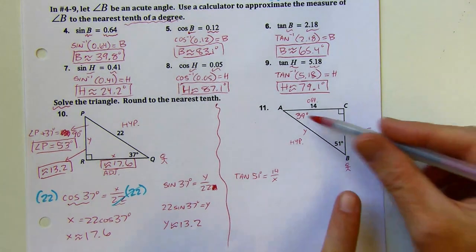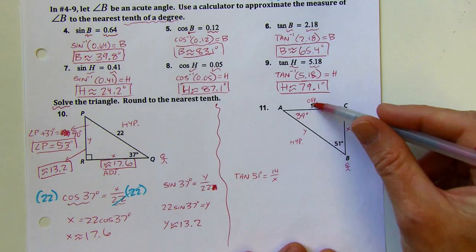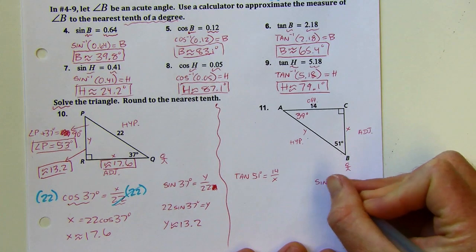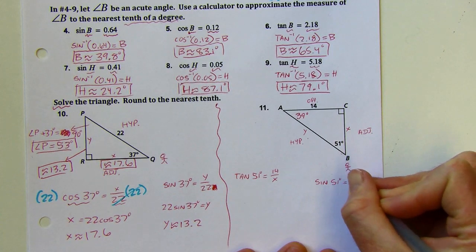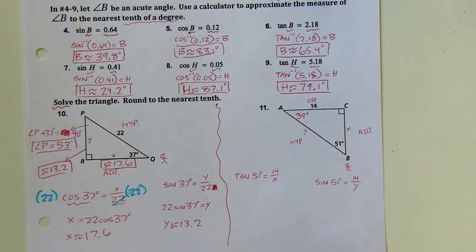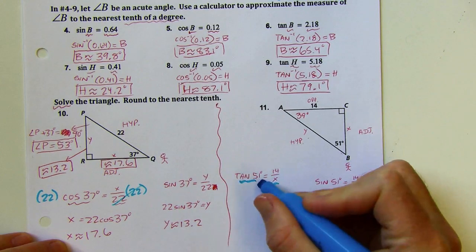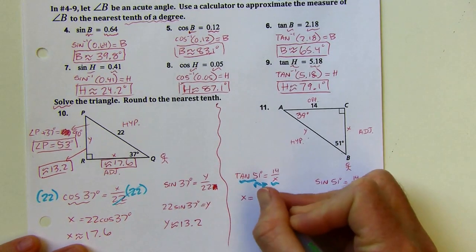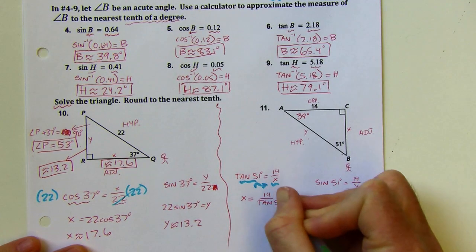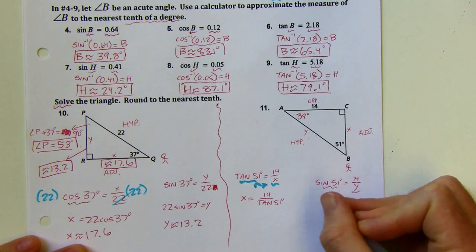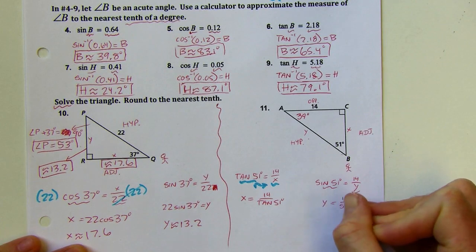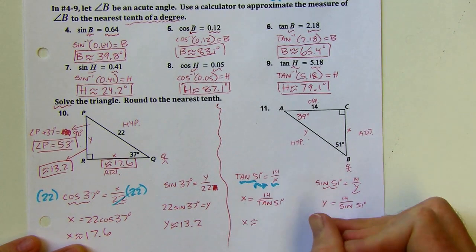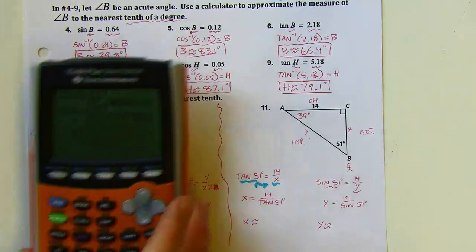I'll set up the equation for y at the same time. For y, I'd use opposite and hypotenuse, so that's sine: sine of 51 degrees equals 14 over y. On both of these I'm going to use the incredible switch to switch the positions, which will isolate x on one side and y on the other. Now I've got what I need for the calculator.